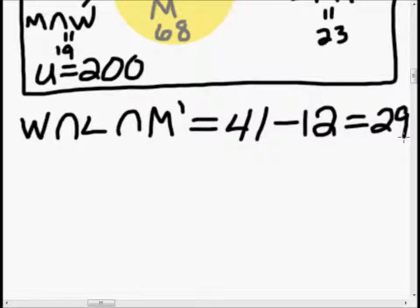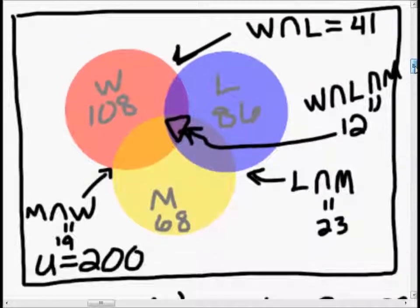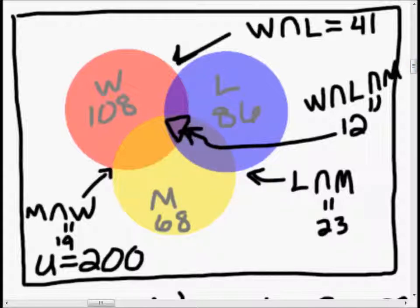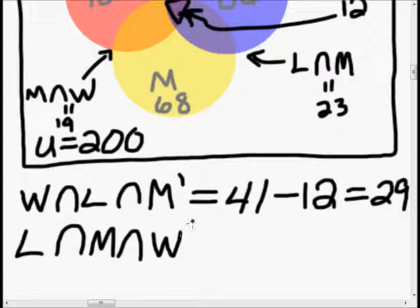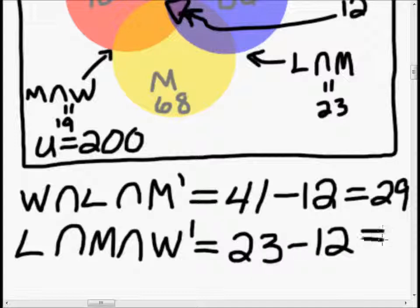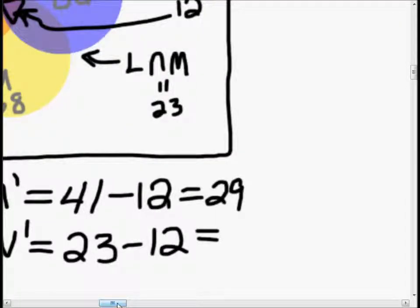What else do we need? We need people who are in a large city and who are married, but who are not in the west — that's this area right here. So that is large city intersection married intersection not-west. We know that the intersection of large city and married is 23, and again we subtract 12 because those are the things that all three overlap. So 23 minus 12 is 11.